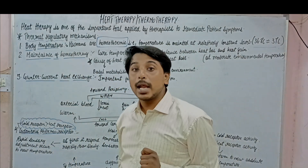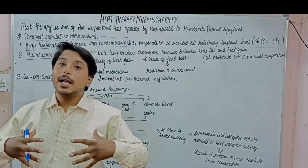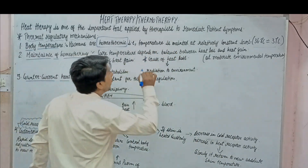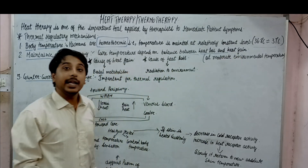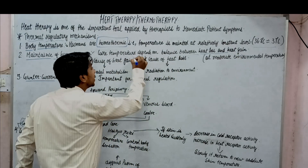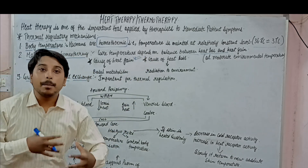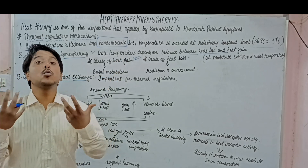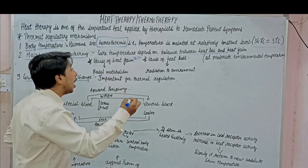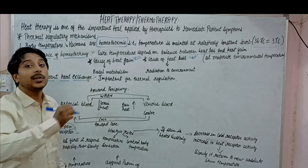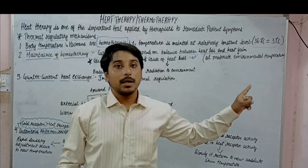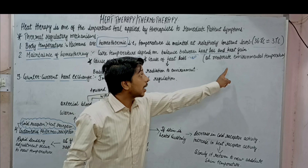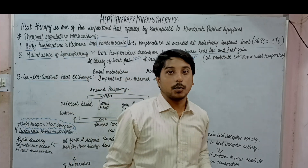The first mechanism is the maintenance of homeothermy. How is homeothermy maintained? If we want to maintain it, we need to know how heat is produced and how heat is lost. Core temperature depends on the balance between heat loss and heat gain. Heat gain occurs via basal cell metabolism, and we want to lose that heat if it is very high. It is lost by radiation to the environment.